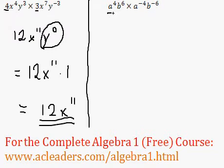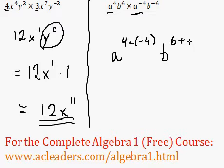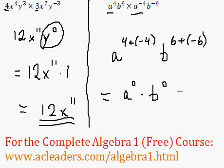So a to the 4, times a to the negative 4. We're adding 4 plus negative 4. And we're combining the b's also. So we have b to the 6 plus negative 6. 4 plus negative 4 is just 0, times 6 plus negative 6 is also just 0.